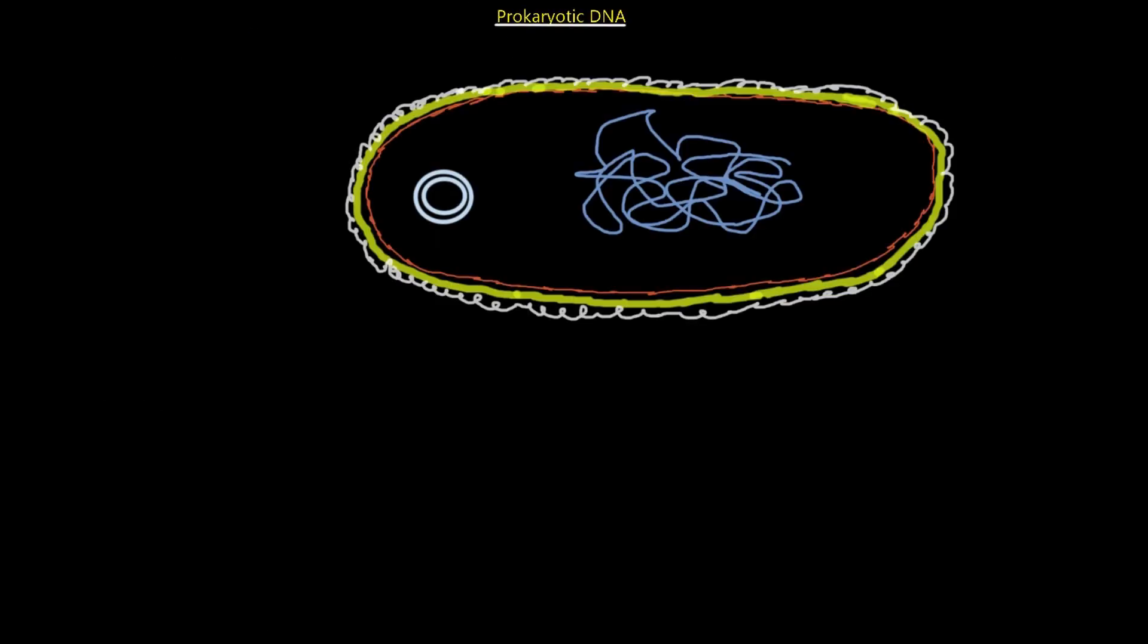So let's begin with prokaryotes. Prokaryotes have two types of genetic material inside their cells. And of course they don't have a nucleus like we do in eukaryotes. Prokaryotic cells do not have a nucleus, so they just have their DNA floating around in the cytoplasm.